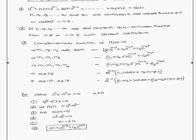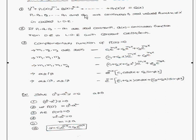Today we are going to discuss differential equations of the second and higher order. If any equation is in the form of y^(n) (the nth derivative), plus p1(x) times the (n-1)th derivative, plus p2(x) times the (n-2)th derivative, and so on, plus pn(x) equal to q(x), where p1, p2, p3 up to pn and q are continuous and real-valued functions, then it is called a linear differential equation.